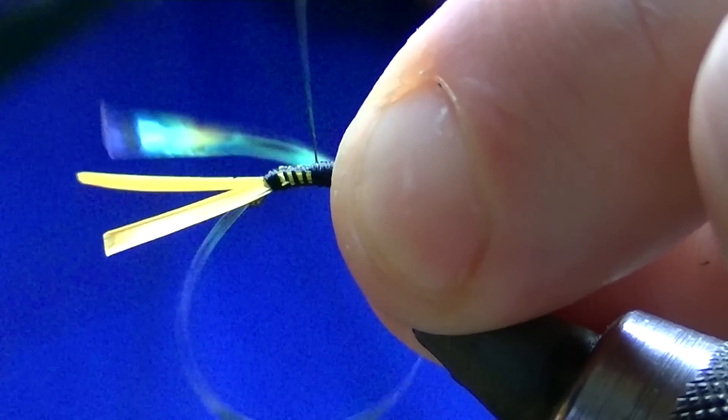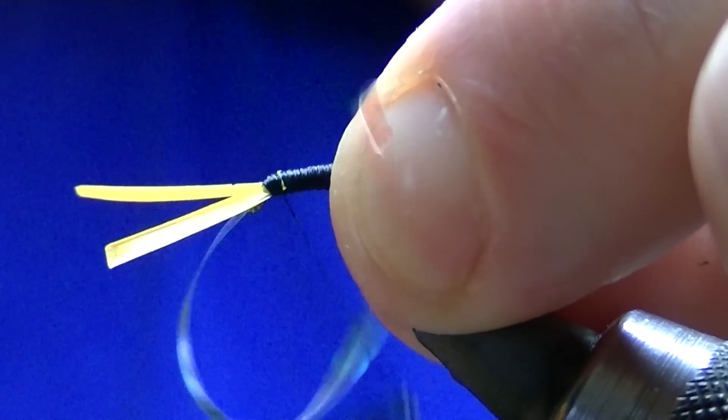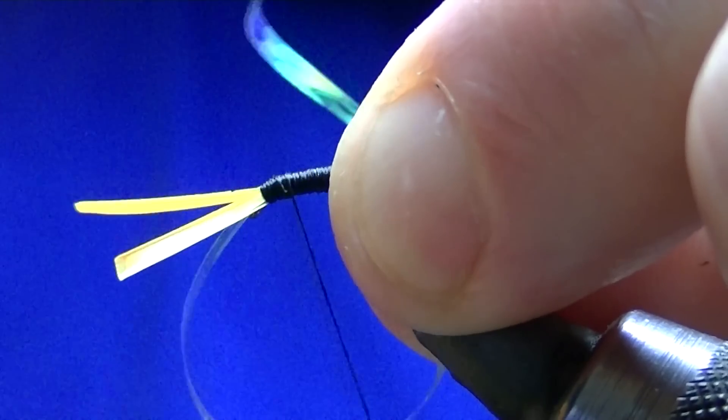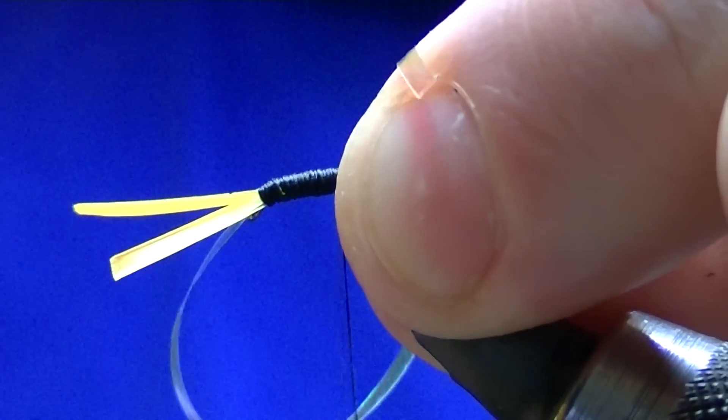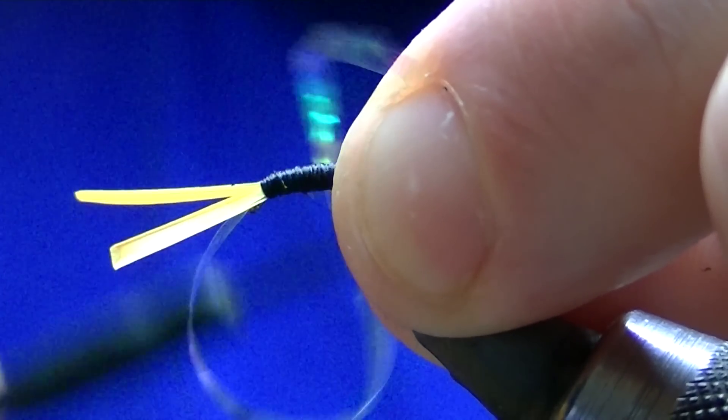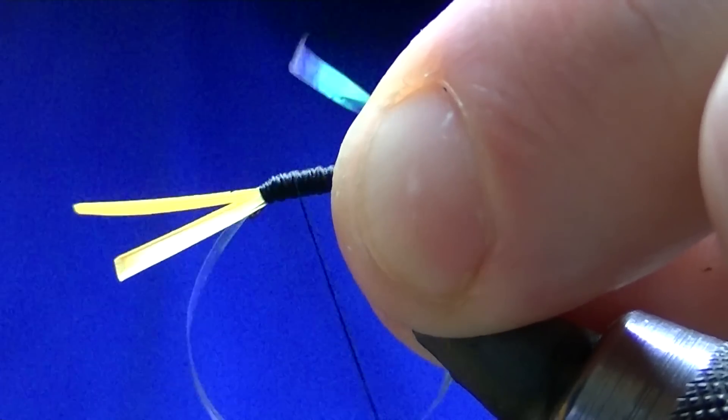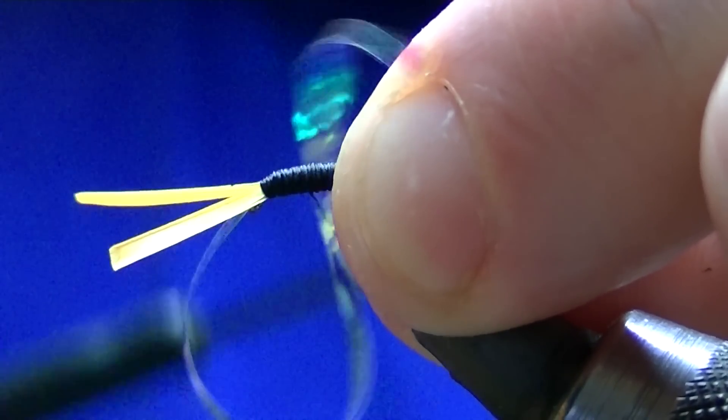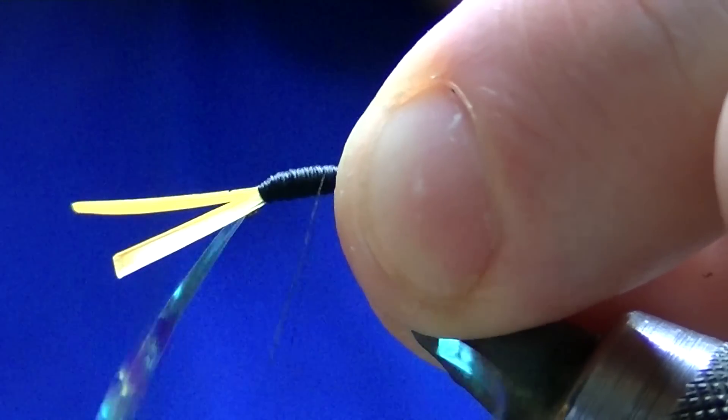Then go forward again, then back. At this point you want to make sure the thorax is the right shape you want it to be. There we go, I'm happy with that.